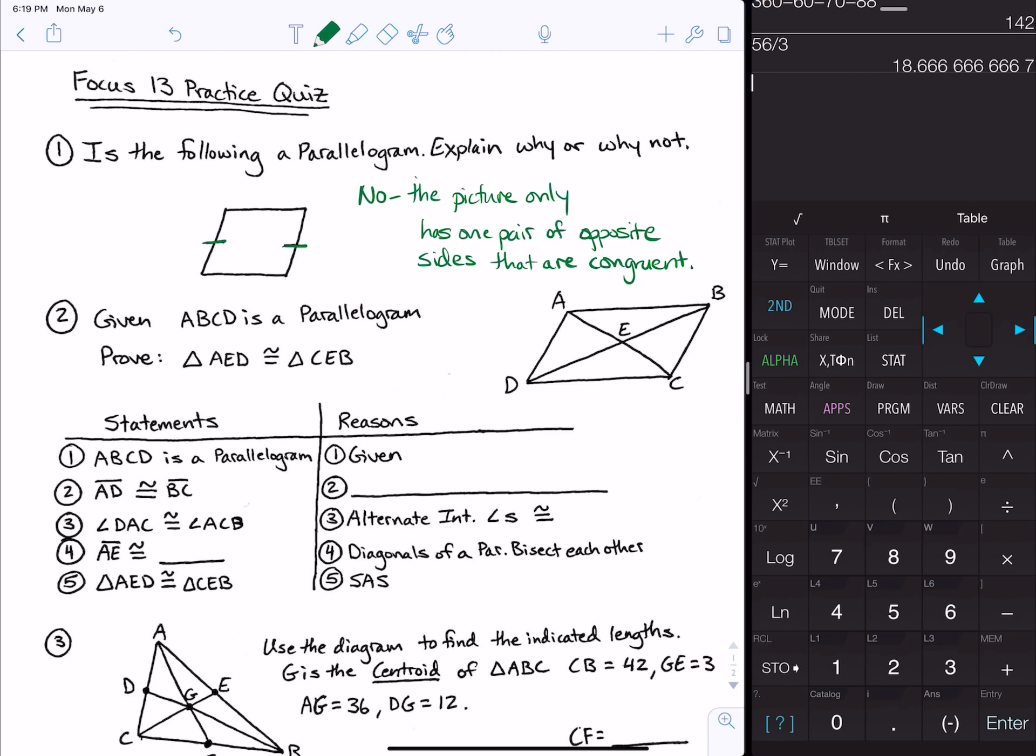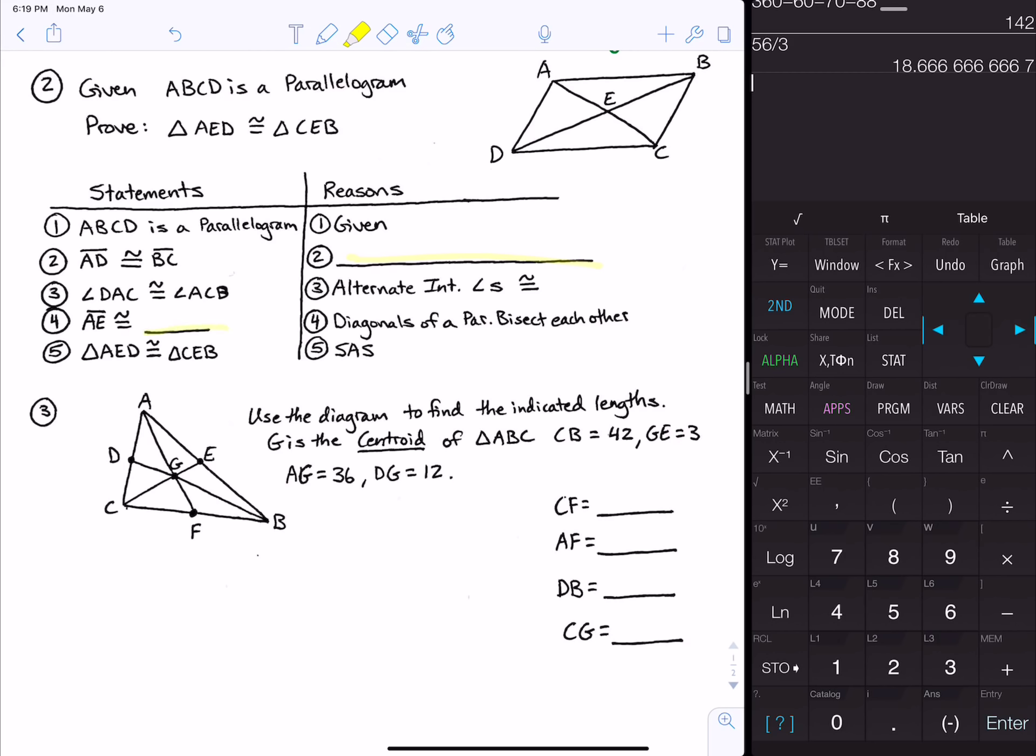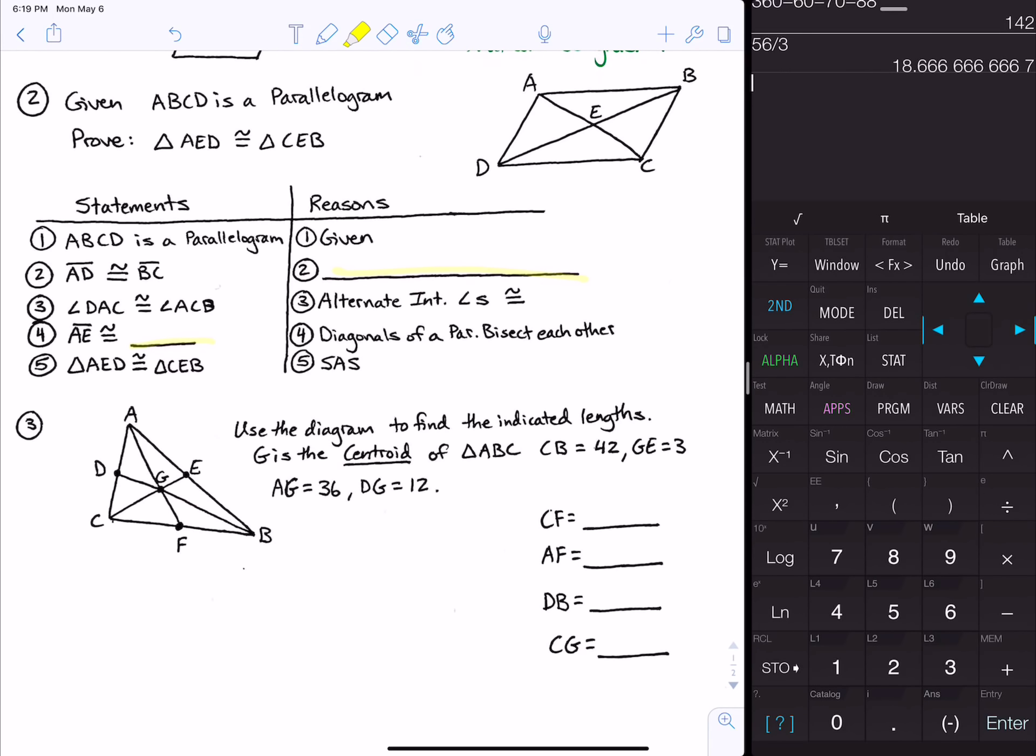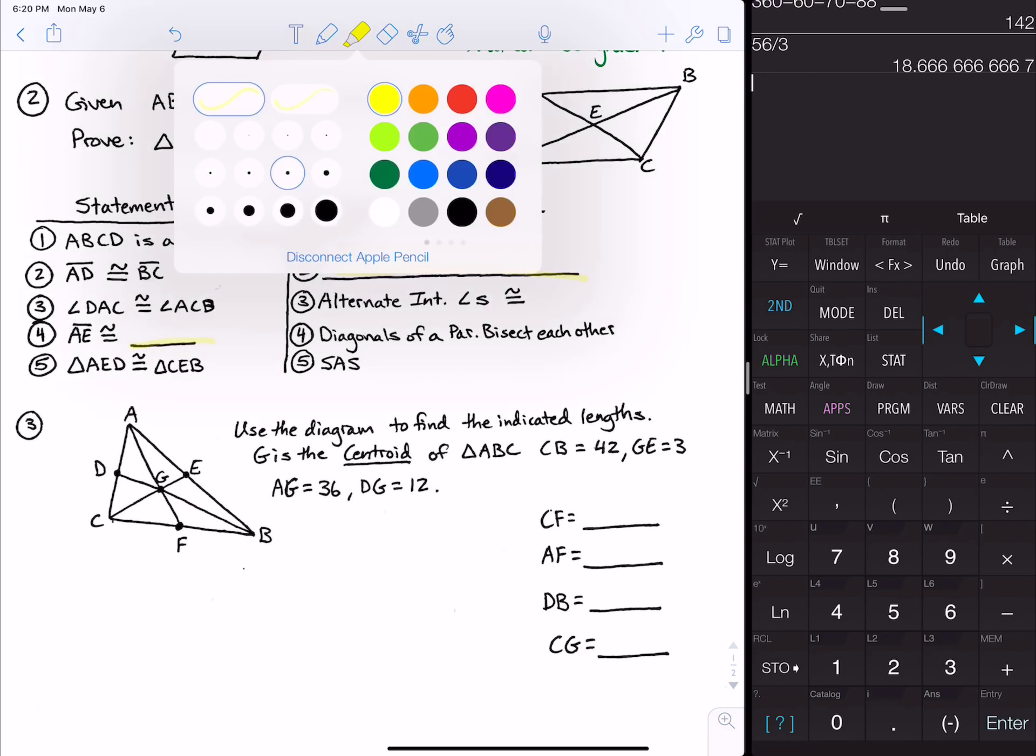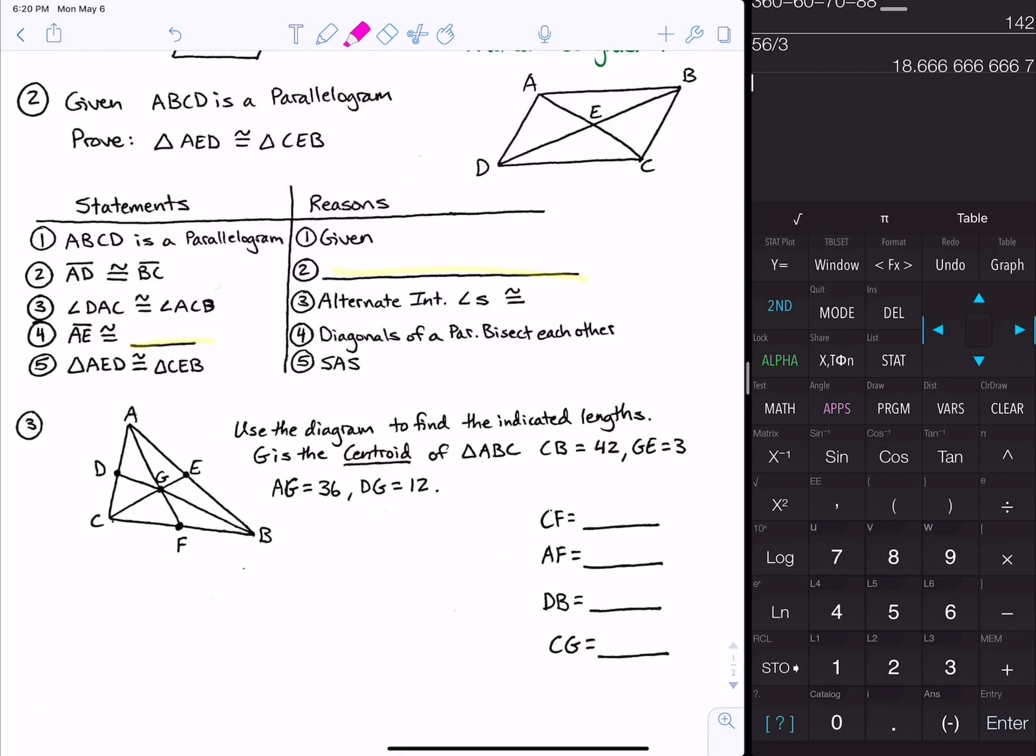Number two is a proof question, so we're going to fill in these blanks. It says given ABCD is a parallelogram, we want to prove that triangle AED is congruent to triangle CEB. I like to draw on my picture to see what I'm aiming for. In step one, they said ABCD is a parallelogram and that was given. Then they said AD is congruent to BC.